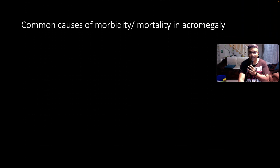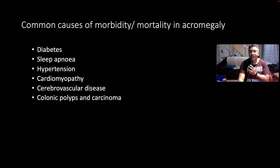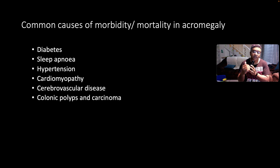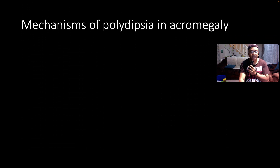One of the common causes of morbidity and mortality in acromegaly: diabetes is a killer because of micro- and macrovascular sequelae. Also sleep apnea and the resultant pulmonary hypertension, hypertension itself, cardiomyopathy, cerebrovascular disease — and don't forget colonic polyps. There is an association between acromegaly, colonic polyposis, and carcinoma. Interestingly, if your patient with acromegaly presents with paraparesis, think about a colonic carcinoma that has metastasized to the spine, causing neurological impingement.